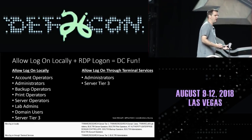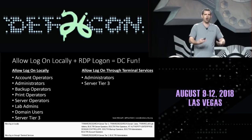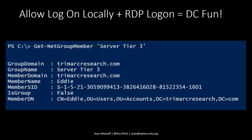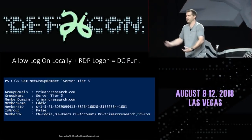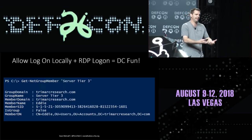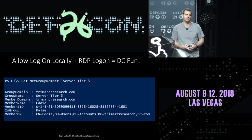Through Microsoft user rights assignments, you can also configure the ability to log on over RDP to a domain controller. Only domain admins and administrators should ever be able to log on to domain controllers via RDP, but a lot of times we find other groups — like 'server tier three' — configured with this right. And whoever can compromise that account can get onto the domain controller and do a lot of fun stuff from there.